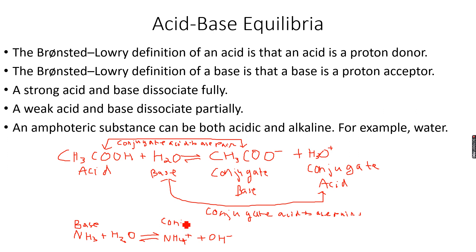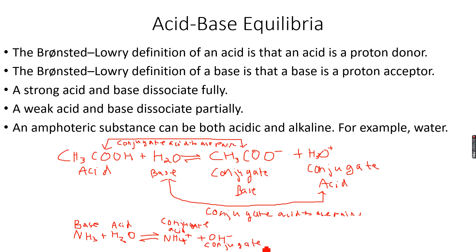H2O donates a proton, so it is acting like an acid. OH⁻ can accept a proton to form back H2O, so OH⁻ is the conjugate base of that acid. So again we have two conjugate acid-base pairs: OH⁻ is a conjugate base because it can accept a proton from the NH4⁺. This is one conjugate acid-base pair and this is the second conjugate acid-base pair.